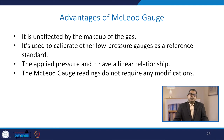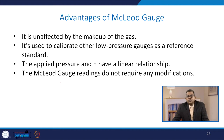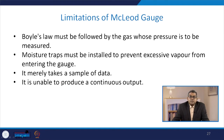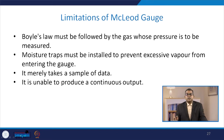Advantages of the Macleod gauge include: it is unaffected by the makeup of the gas; it is used to calibrate other low-pressure gauges as a reference standard; the applied pressure and h have a linear relationship; and readings do not require any modifications. Limitations include: the gas must obey Boyle's law; moisture traps must be installed to prevent excessive vapour from entering the gauge; it merely takes a sample of data; and it is unable to produce a continuous output.